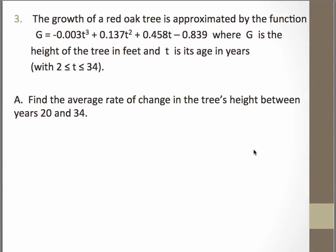So let's look at another one. We're talking about the growth of a red oak tree. And the growth of the tree is approximated by this cubic polynomial with all these big decimals. And t is the age in years, two years old to 34 years old. So we first want to find the average rate of change in between years 20 and 34. So we're trying to find change in g over change in t.